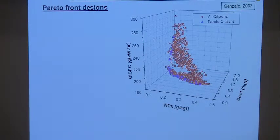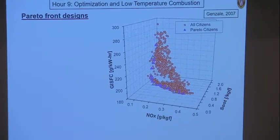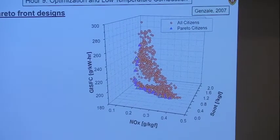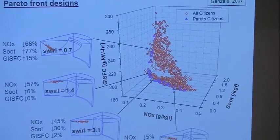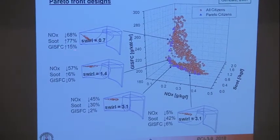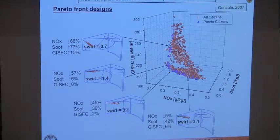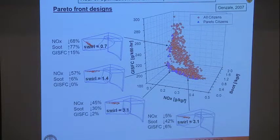When we do that, we find a plot of gross indicated specific fuel consumption, NOx, and soot. The blue points are the Pareto citizens. If we pick some of them — the yellow triangles — some cases have high fuel consumption, higher than our baseline, with high soot but really low NOx. They're probably not interesting because of the high soot. One such case had low swirl but a very steep spray angle down into the bowl, which put all the fuel in the bowl and is why we get such high soot.